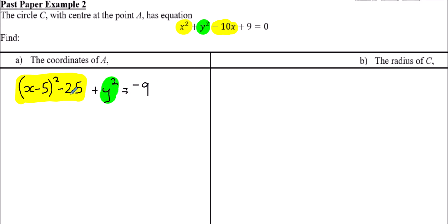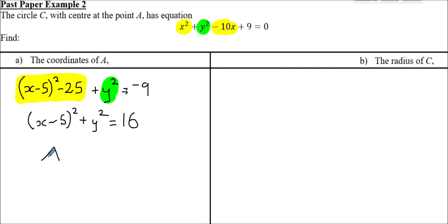Adding 25 to both sides: (x - 5)² + y² = -9 + 25 = 16. For part a, the center: the x-coordinate is 5 (from x - 5), and for y², we can think of it as (y - 0)², so y = 0. The center is at (5, 0), which lies on the x-axis.